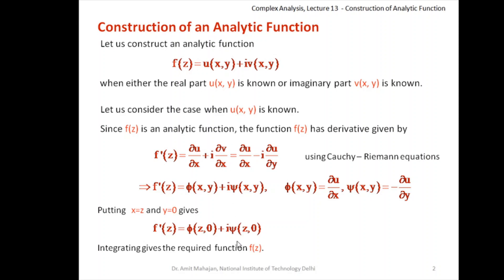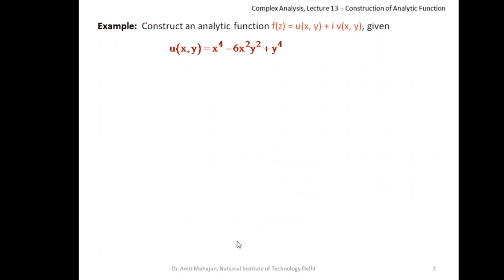This last equation, if we simply integrate with respect to z because it's a function of one variable, immediately gives us the f(z) function which is the required function. The steps are very simple. We can utilize this without any further difficulty. For example: construct an analytic function f(z) = u + iv when u = x⁴ − 6x²y² + y⁴.